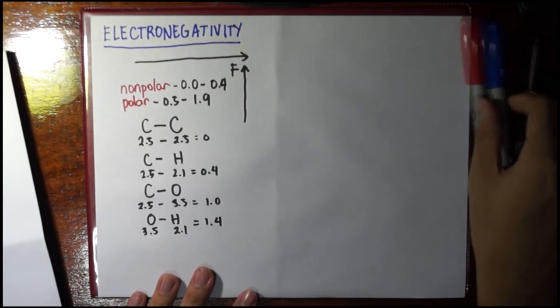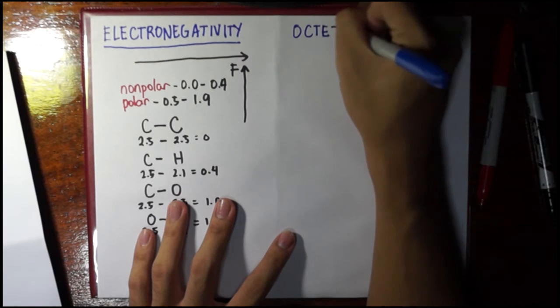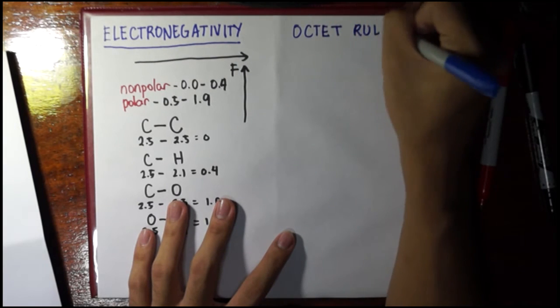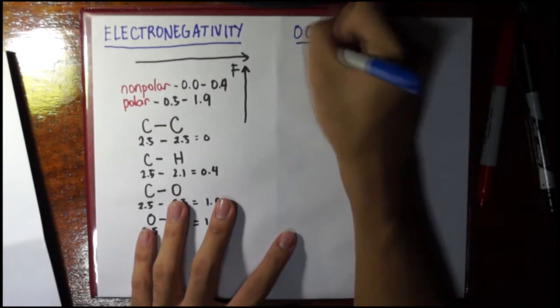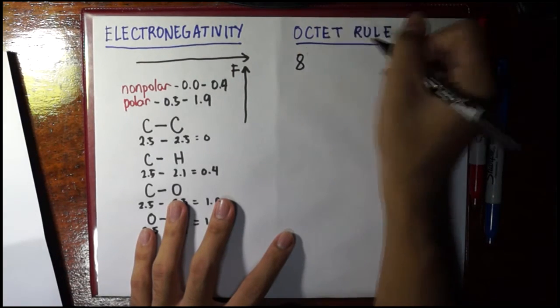Now, the next quick topic that I would like to review is the octet rule. Just to recall why, for example, for carbon, we should have four bonds with it. Well, it says that octet, of course, meaning 8, the valence electrons of an atom should have 8 electrons.